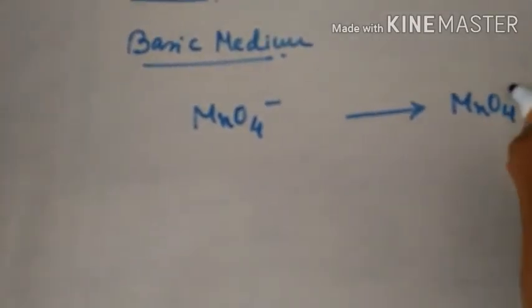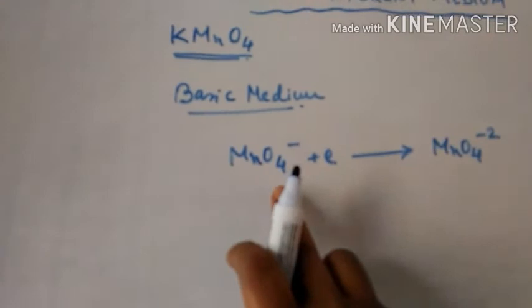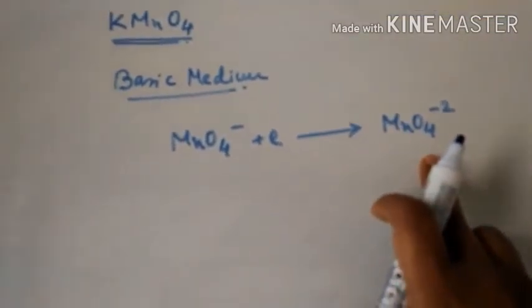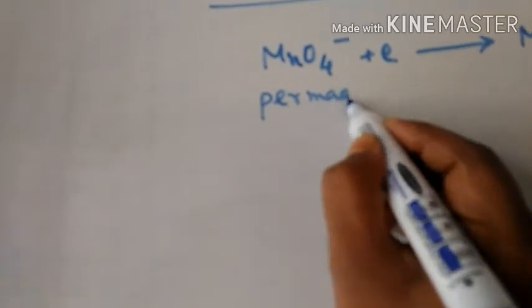...manganate ion, gaining one electron. Permanganate, MnO4⁻, converts into manganate ion, MnO4²⁻.